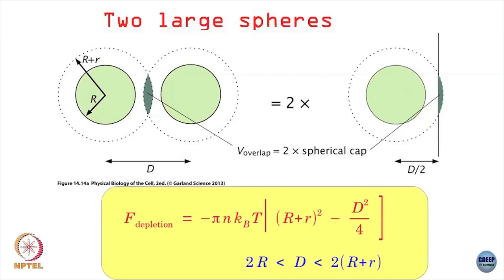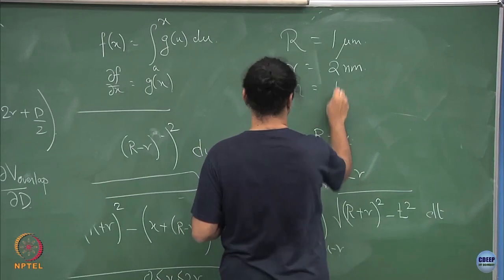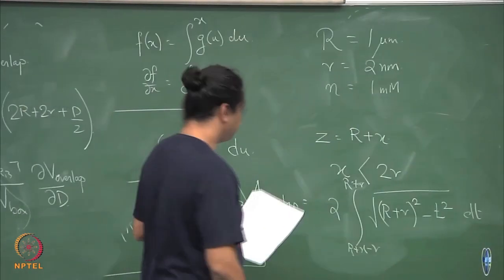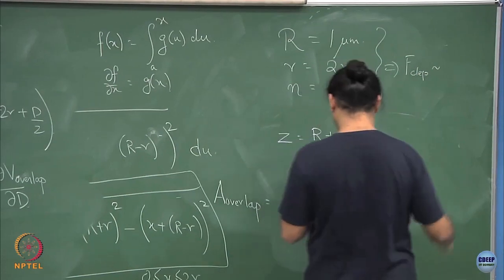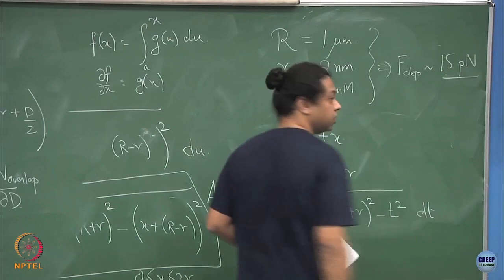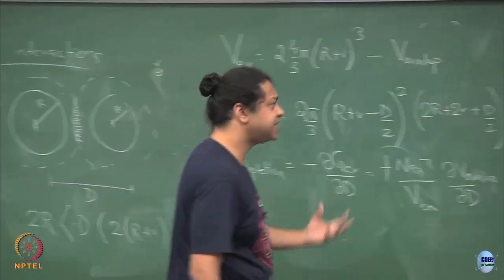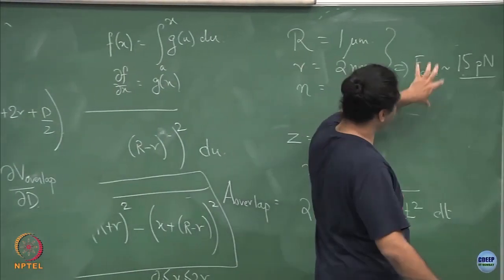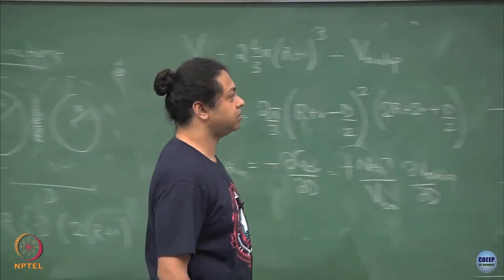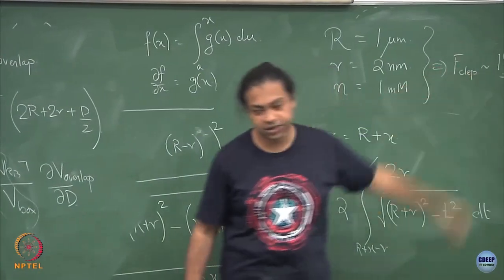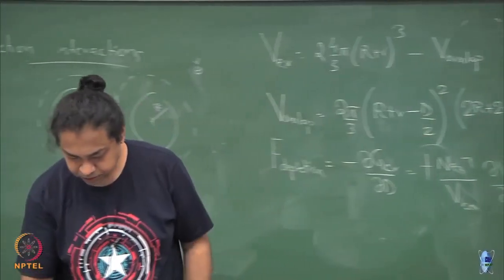We can put in some typical numbers — larger particles of about a micron in size, smaller crowder particles of a few nanometers, and a concentration of smaller particles around millimolar. Putting these into the formula, the depletion force comes out to something like 15 piconewtons, which is an appreciable force in the cellular context. For realistic densities and sizes you get a significant depletion force, large enough that in many cases it must be taken into account.